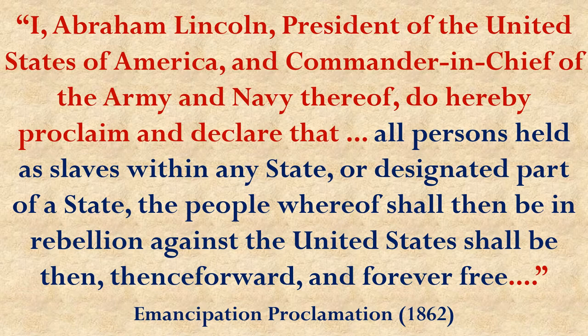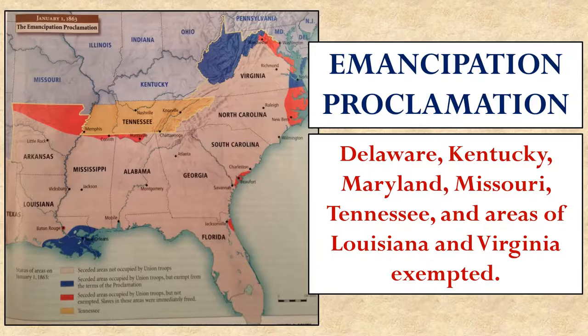As we taught in the last chapter, this Emancipation Proclamation did not free all the slaves. It only freed those in areas in rebellion against the United States at that time. There were areas already conquered or that had never rebelled — Delaware, Kentucky, Maryland, Missouri, Tennessee, and areas of Louisiana and Virginia — where you could still keep your slaves regardless of the Emancipation Proclamation. So obviously, something more had to be done.